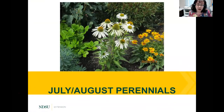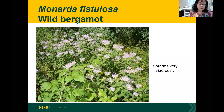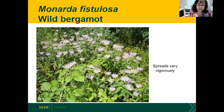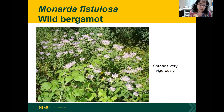Moving into July and August, we have so many perennials to choose from. We'll start with Monarda, or Bee Balm, or Wild Bergamot — this is native to the region, and the native species spreads very vigorously. Along with Jan and our postdoc, we are researching Monarda to see if the cultivars are as effective in attracting bees and other insects. We'd like to recommend a cultivar that doesn't spread as invasively as Monarda fistulosa.